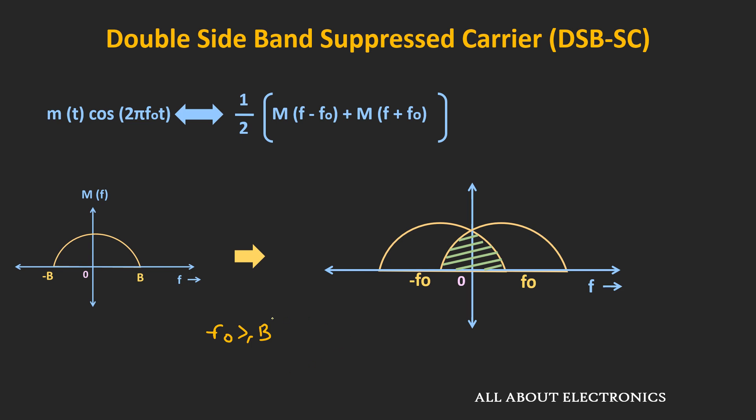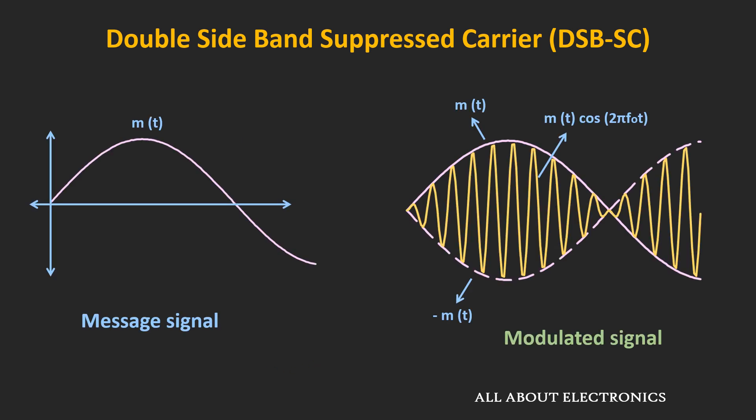Now let's see the time domain representation of this modulated signal. If m(t) is the modulating signal and cos(2πf₀t) is the carrier, then the modulated signal will look accordingly. One thing to notice is that at every zero crossing of the message signal, there will be a phase reversal in the modulated signal.